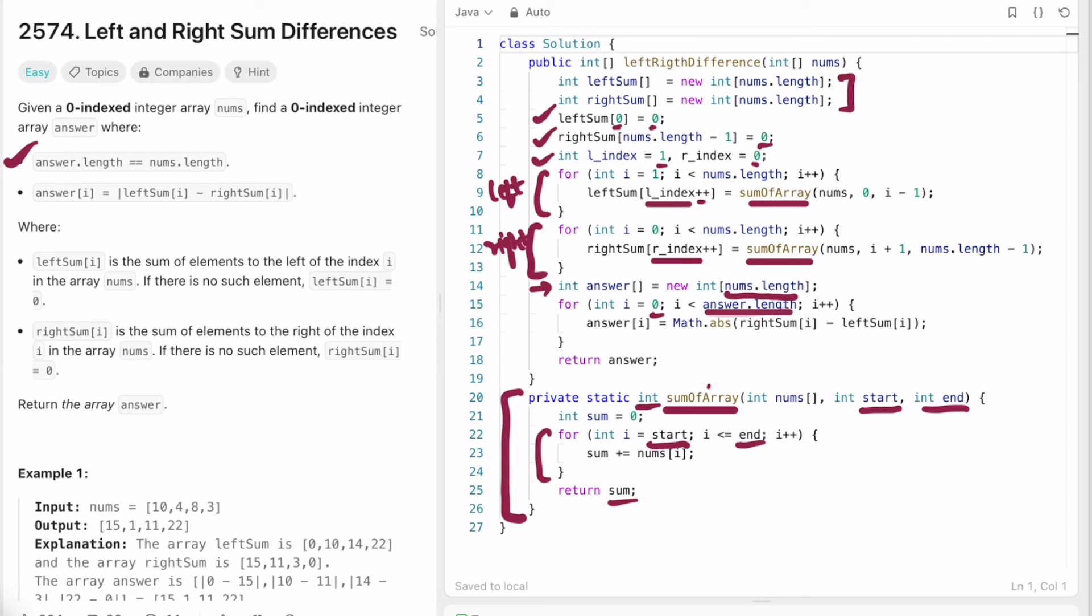And you are finding the absolute difference between rightSum and leftSum elements inside those two arrays. So you can also do leftSum minus rightSum because ultimately you get the absolute value for that element. Finally you return the array answer.